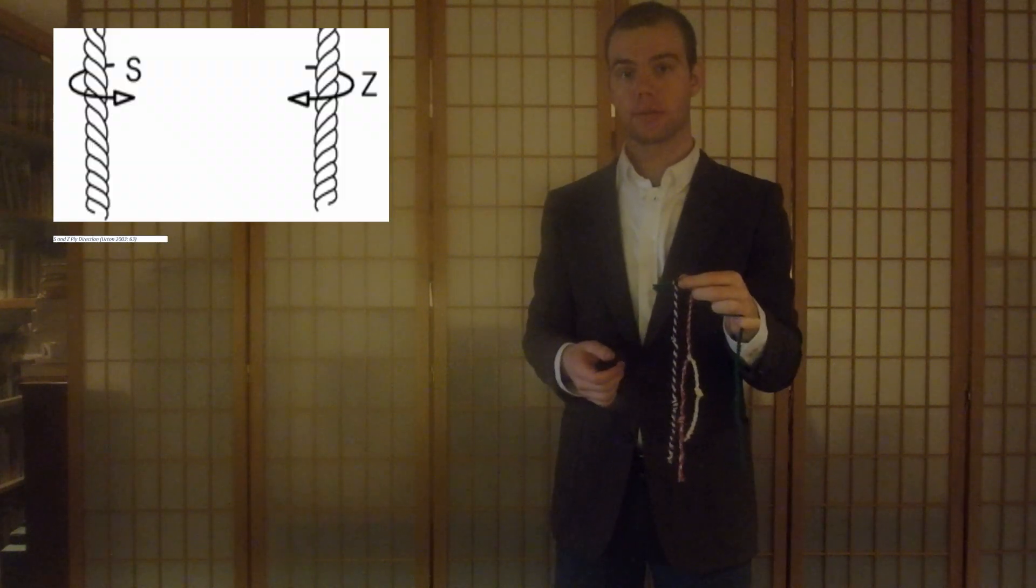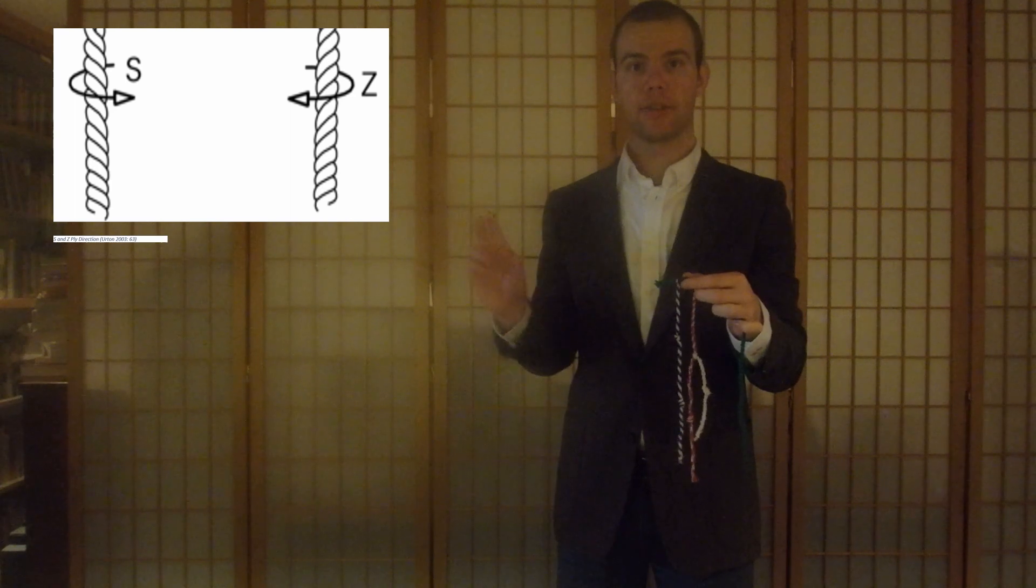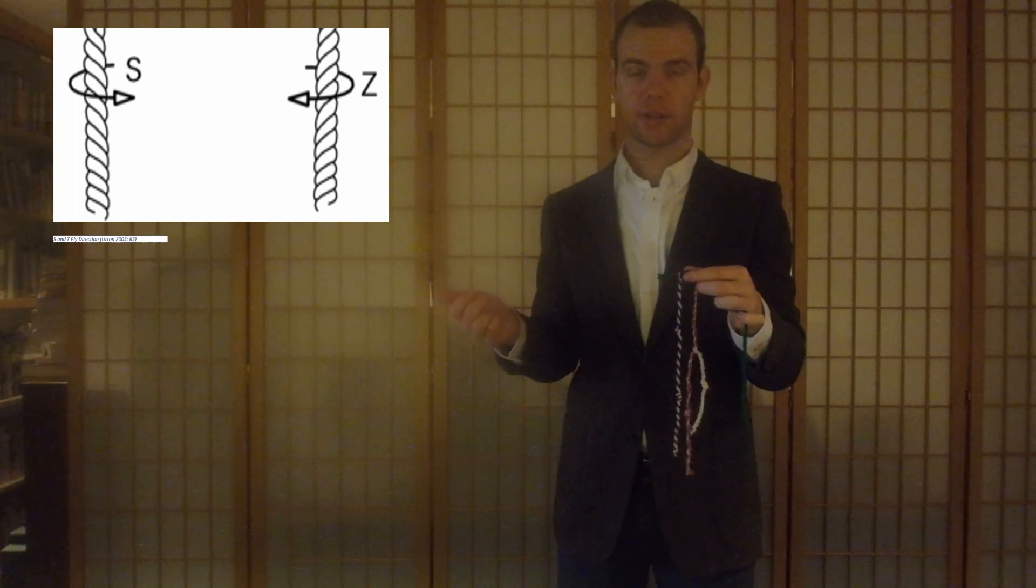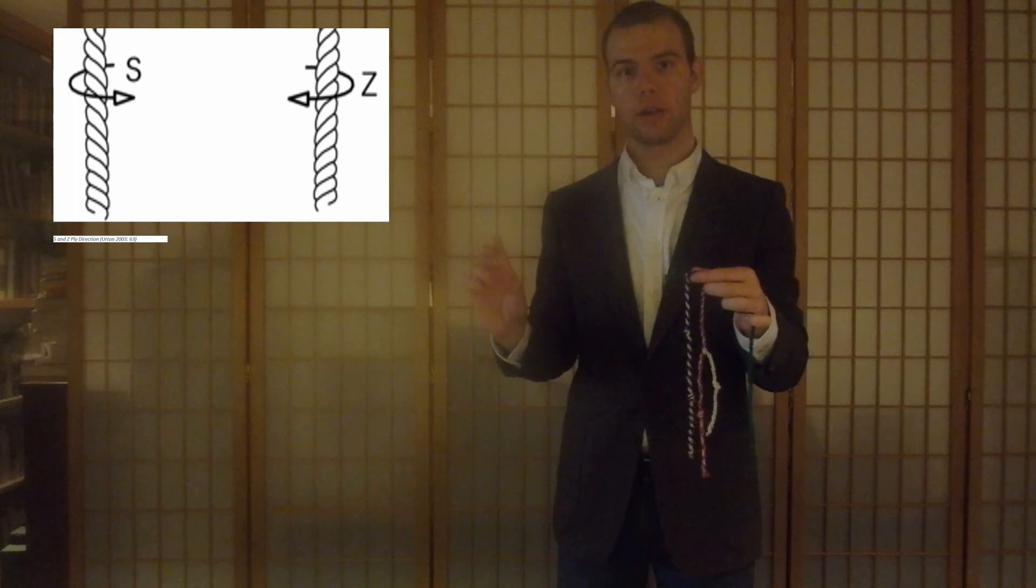So each one of these kipu chords can vary in a couple of ways and signify information in that way. First of all we have ply direction, just like we saw with the pendant chords, and so you can either signify one binary category in an s-direction or another binary category in the z-direction.